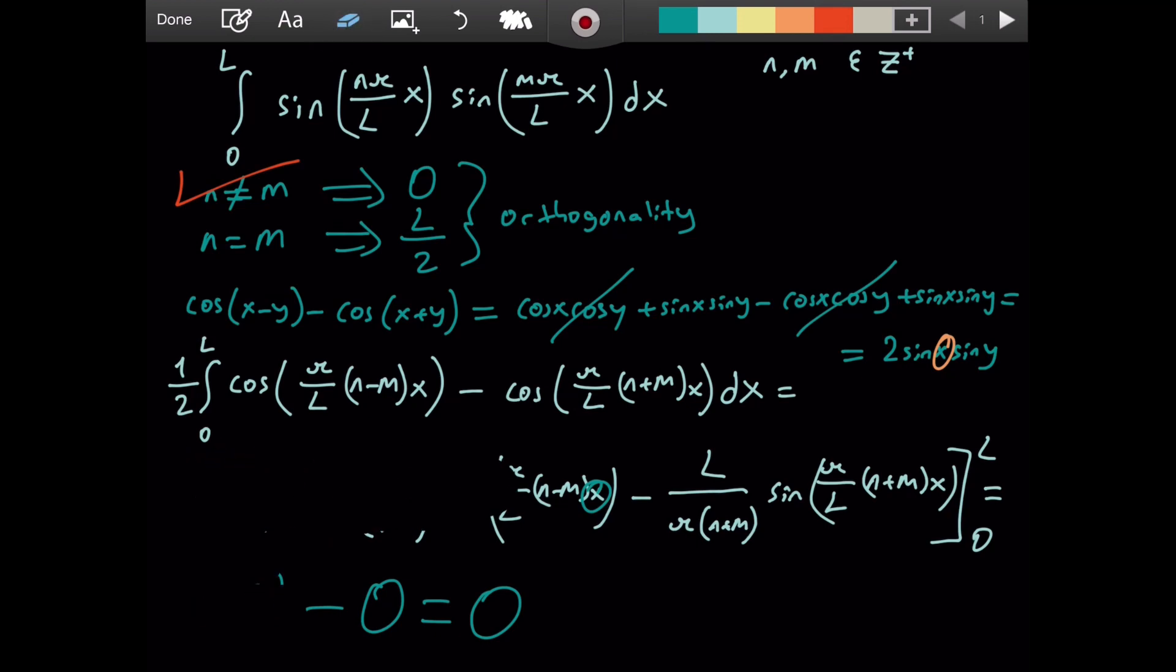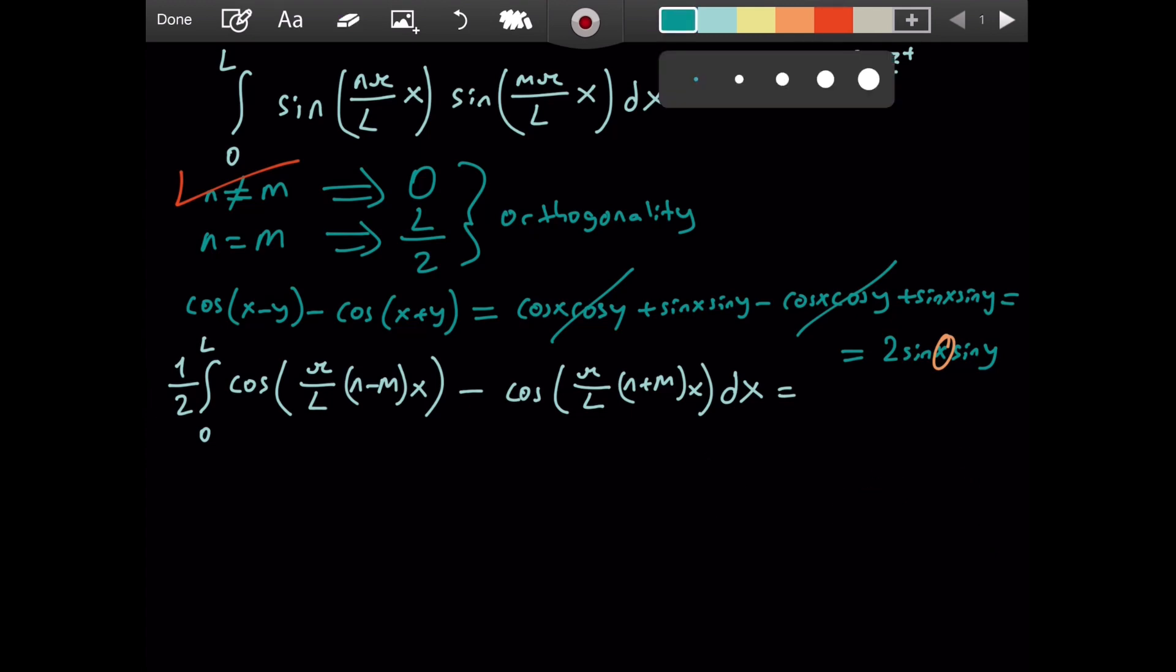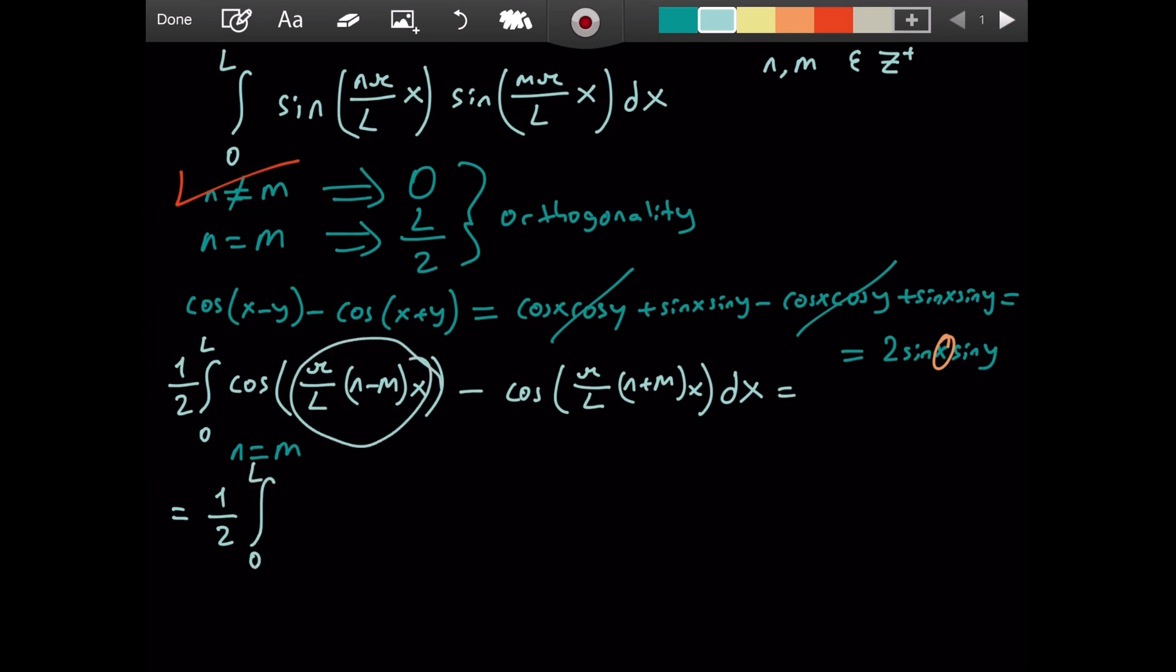Now comes the second part, which I like more, a bit more. Now let's suppose that n equals m. How does the integral change then? Well, we will have 1 over 2. And then, from 0 to L, here it will be 0, right?